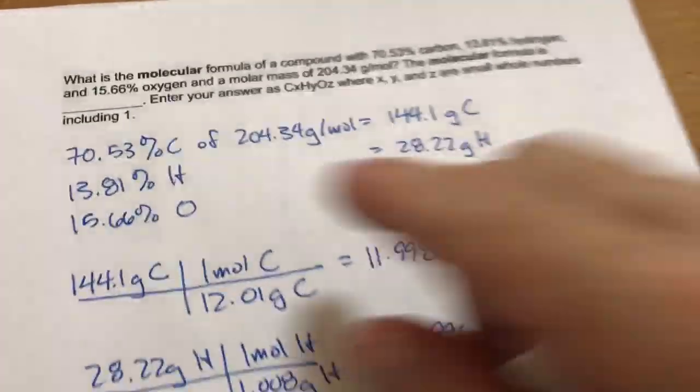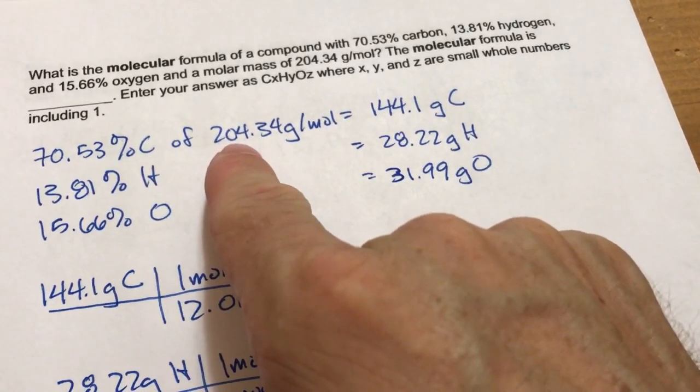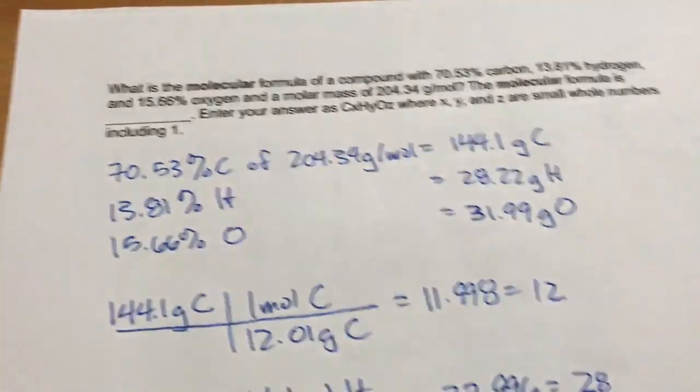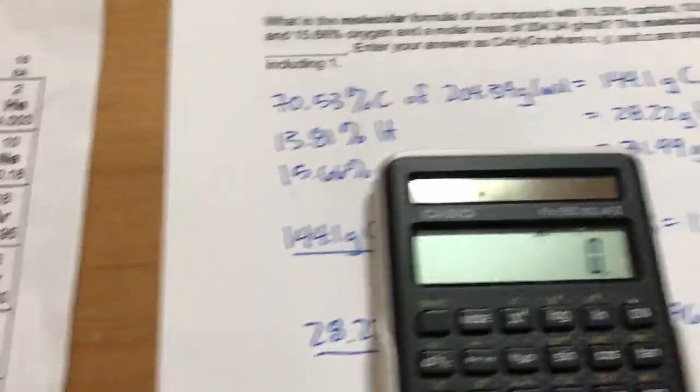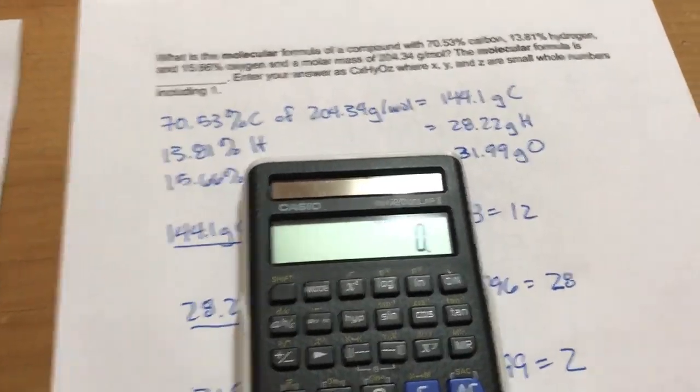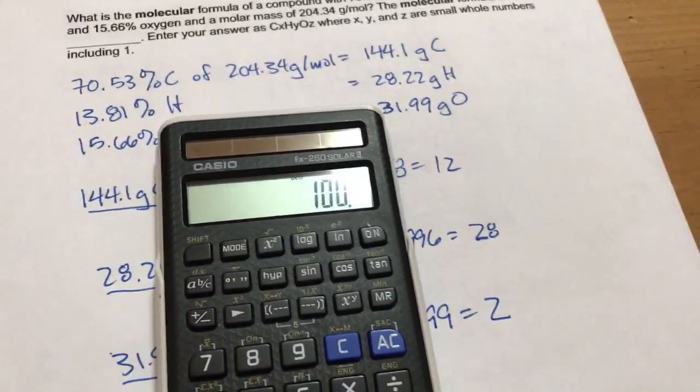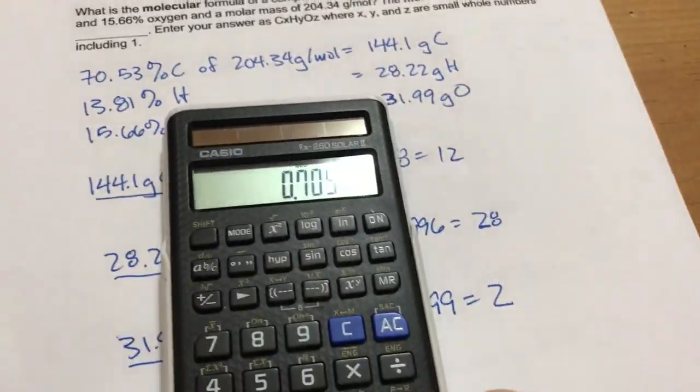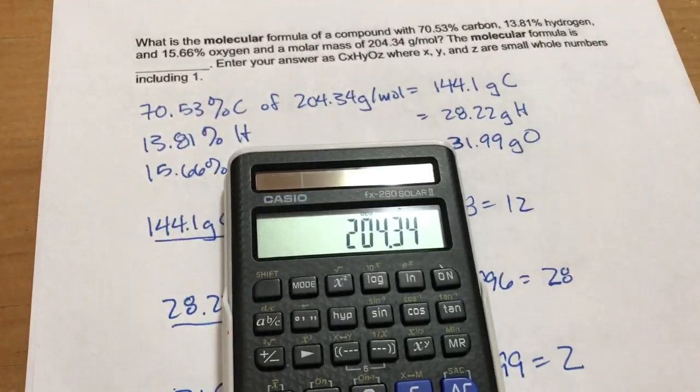What I've started to do is I've taken each of the percentages of the molar mass, so those will be multiplied together. When I multiply a percent, mathematically I'm going to take 70.53 percent, which means divide by 100, and then multiply by 204.34.